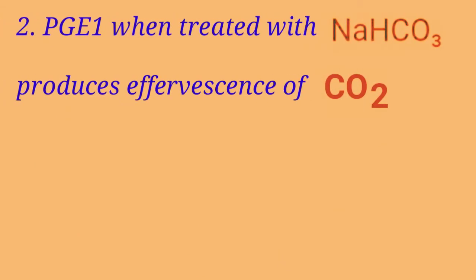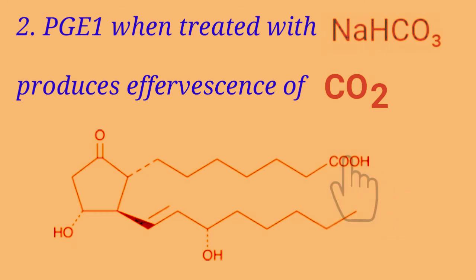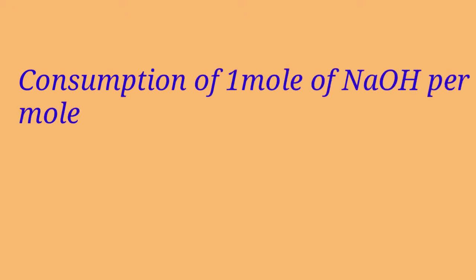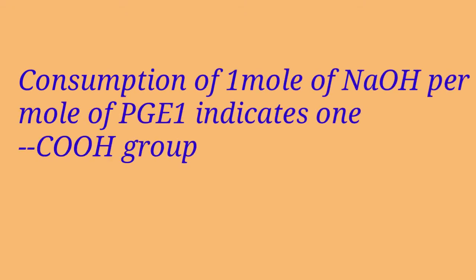PGE1 when treated with sodium bicarbonate produces effervescence of carbon dioxide, which indicates the presence of a carboxylic acid group. Further, microtitration with alkali confirms the presence of the carboxylic acid group, and consumption of one mole of NaOH per mole of PGE1 indicates one COOH group.